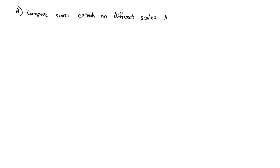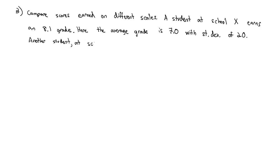Let's say a student at school X earned an 8.1 grade, and here the average grade is a 7.0 with a standard deviation of 2.0, while another student at school Y earned a 7.4 grade.